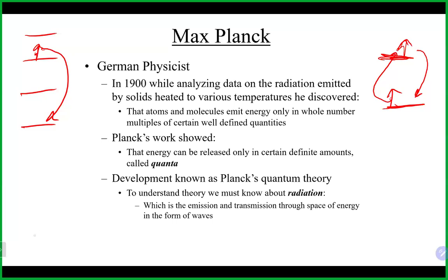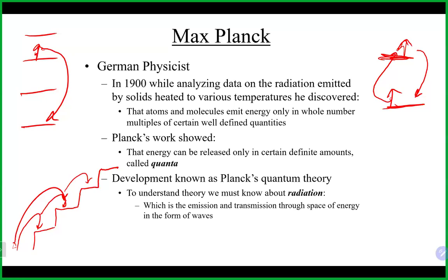Quantized energy is sometimes referred to like a staircase: when you walk upstairs you have enough energy to get to each step. You don't stop halfway between steps — and that's how electrons transition. They gain enough energy to fully transition upward to one or two energy levels, and transition downward the same way. Just like someone could do one stair at a time or two at a time, we'll never find an electron between energy levels — they'll either be on one energy level or another.